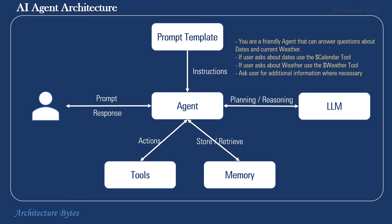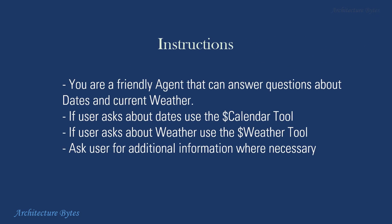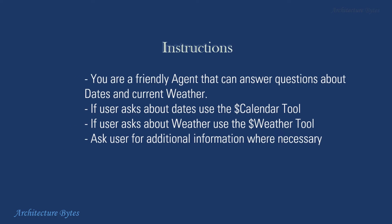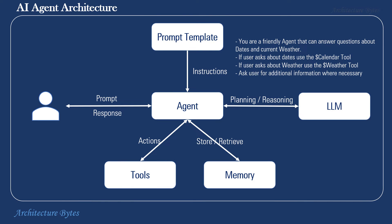Here is a prompt template or instructions: 'You are a friendly agent that can answer questions about dates and current weather. If the user asks about dates, use the calendar tool. If the user asks about weather, use the weather tool. Ask the user for additional information where necessary.' Configuring instructions and the list of available tools and their interfaces are part of the agent setup process. The user prompt or query is: 'What is the weather like right now?' Note that there is no geographic location or city specified in this query, and we will see how this is dealt with.